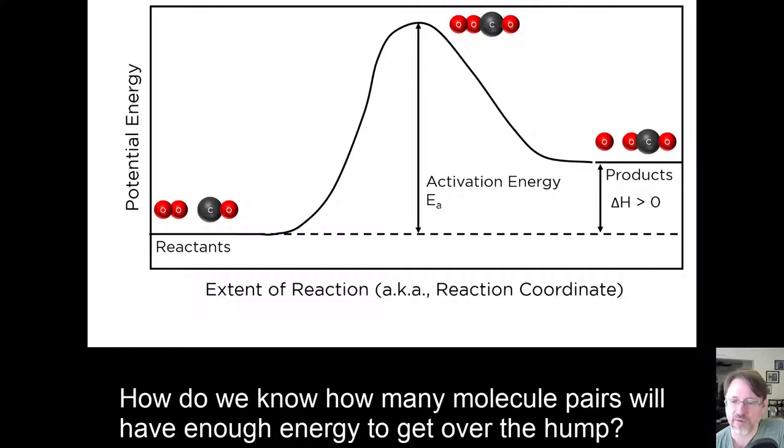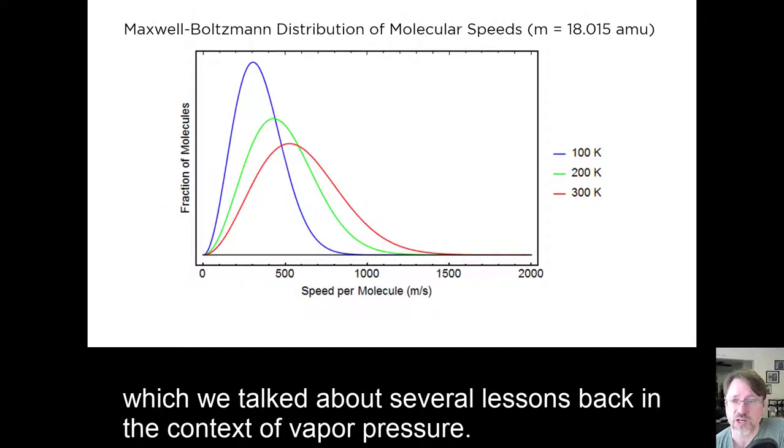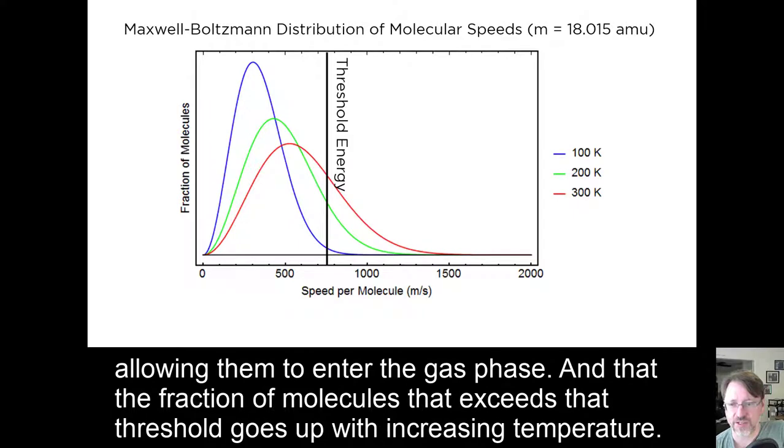How do we know how many molecule pairs will have enough energy to get over the hump? Well, remember the Maxwell-Boltzmann distribution of molecular speeds, which we talked about several lessons back in the context of vapor pressure? In that discussion, we noted that there was a threshold energy for molecules to escape their intermolecular attractions to their neighbors, allowing them to enter the gas phase. And that the fraction of the molecules that exceeds that threshold goes up with increasing temperature.